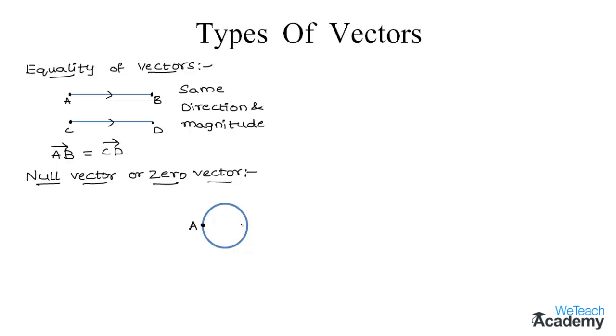Then what would be the length of the vector AA? So clearly we know that the length of the vector AA would be zero.